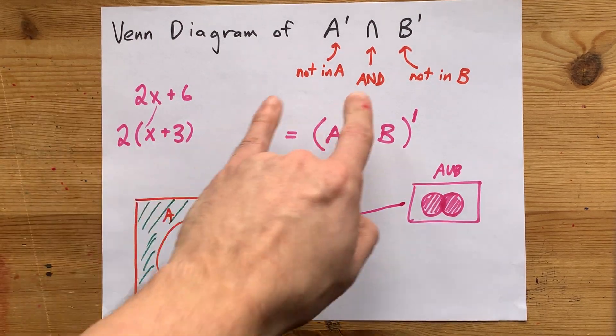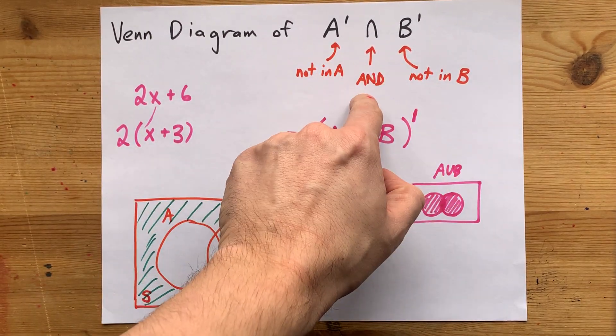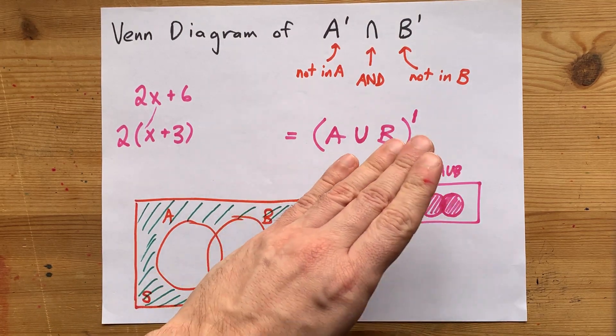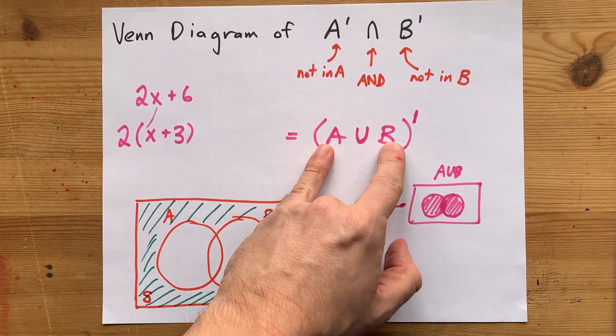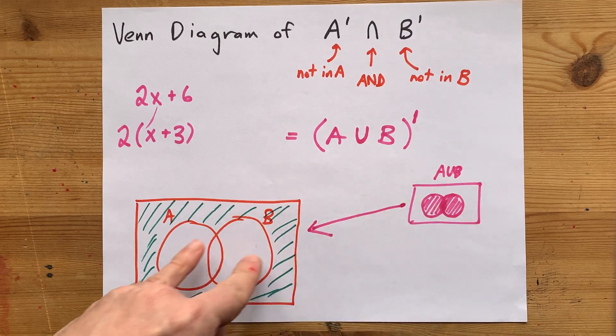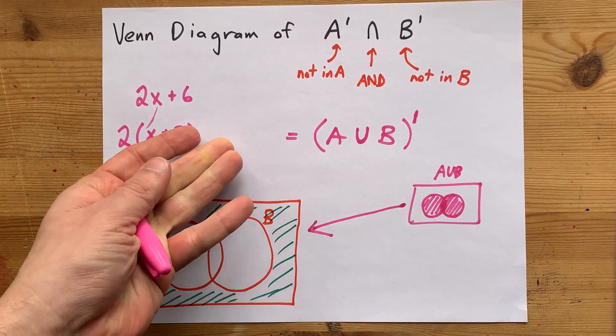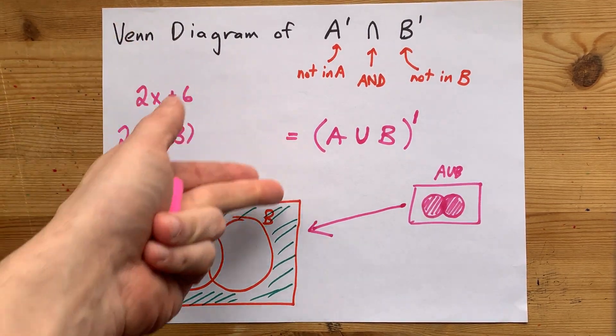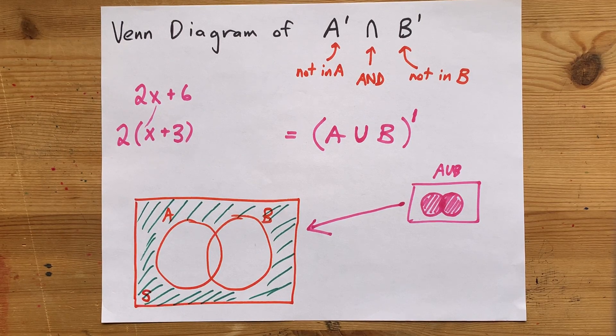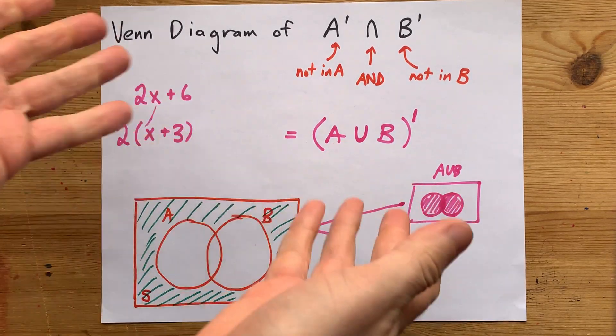So, you can either do this raw, not inside of A and not inside of B, or you can draw A union B and then reverse all of the shadings. Which way do you prefer? Honestly, it would be really nice if you understood both. And that's just one I'm going to count as you to do.